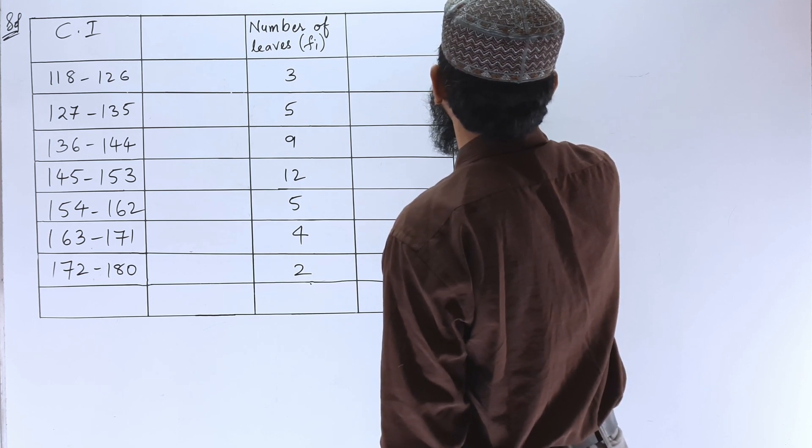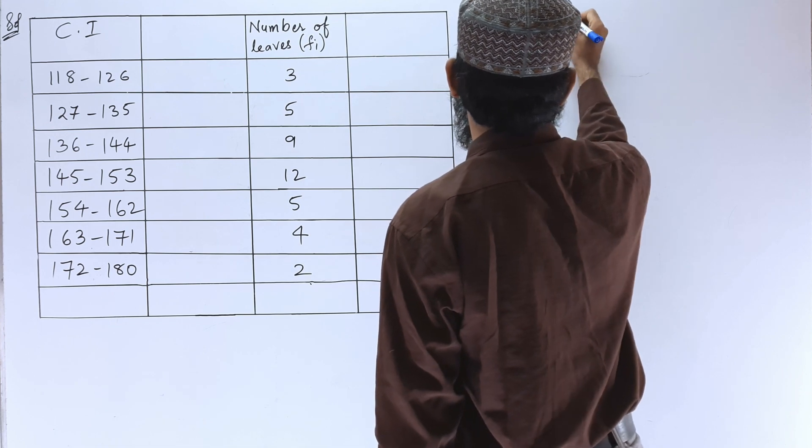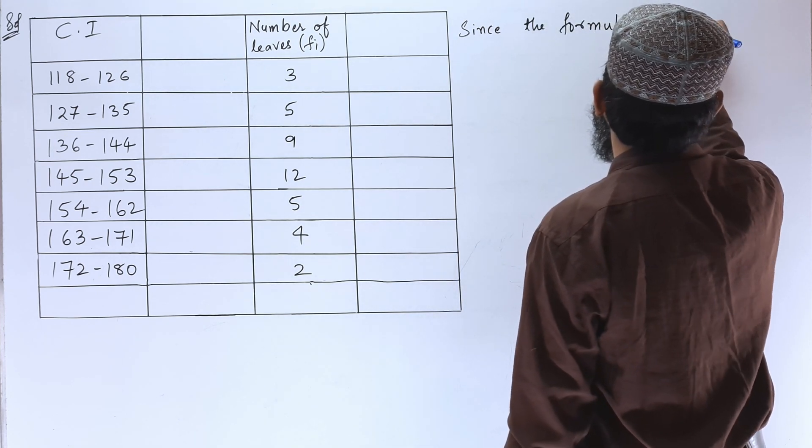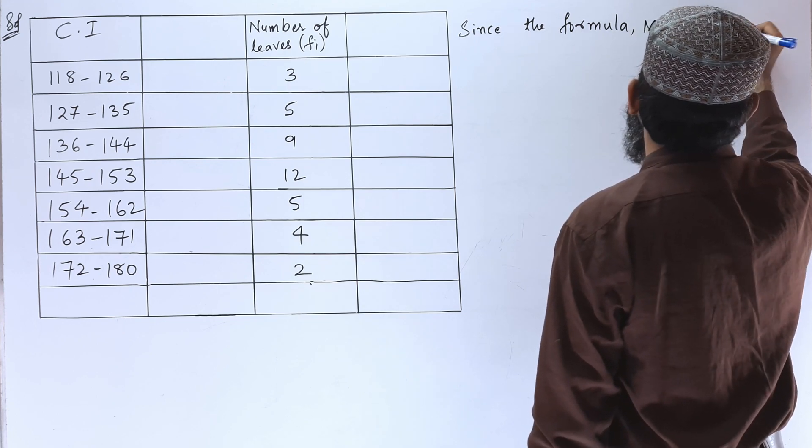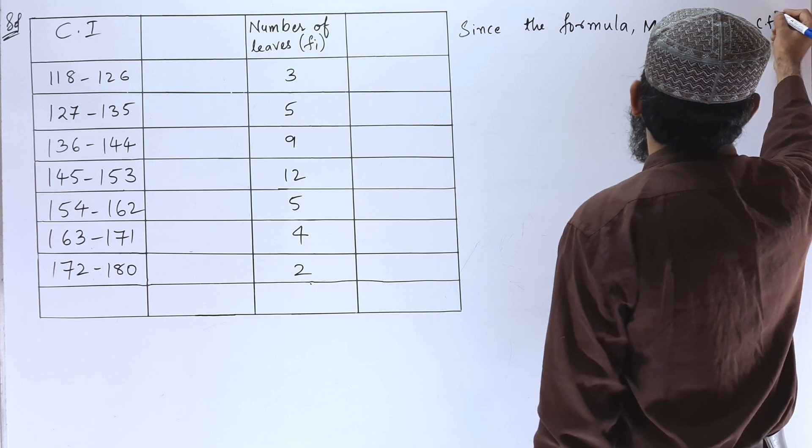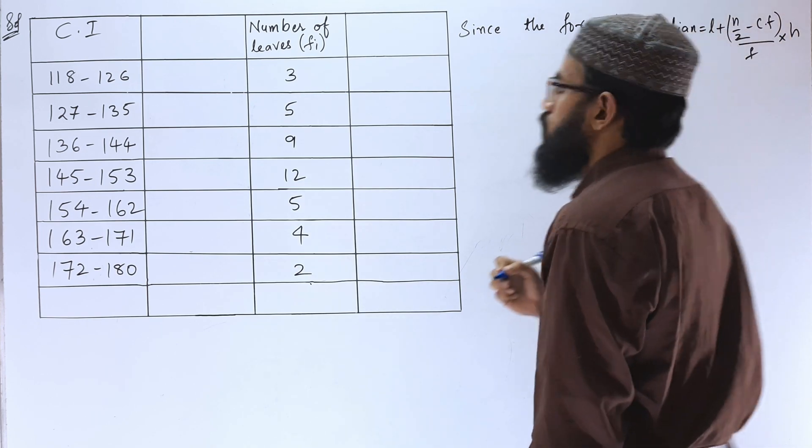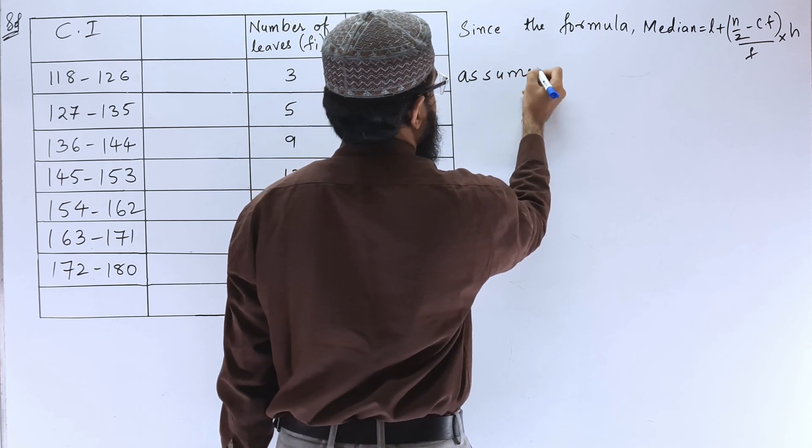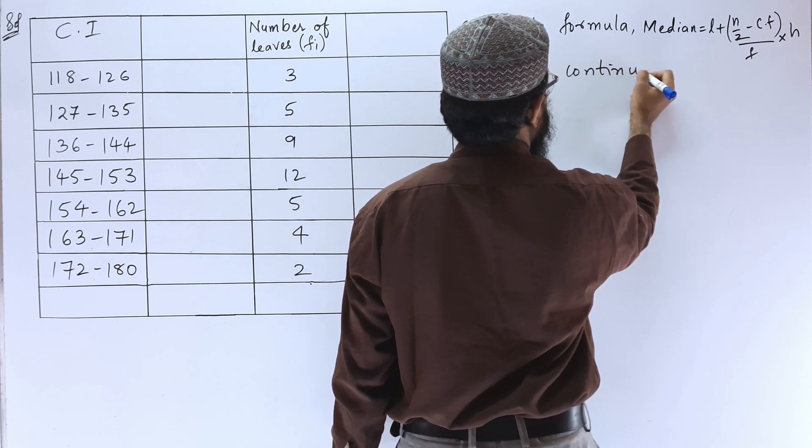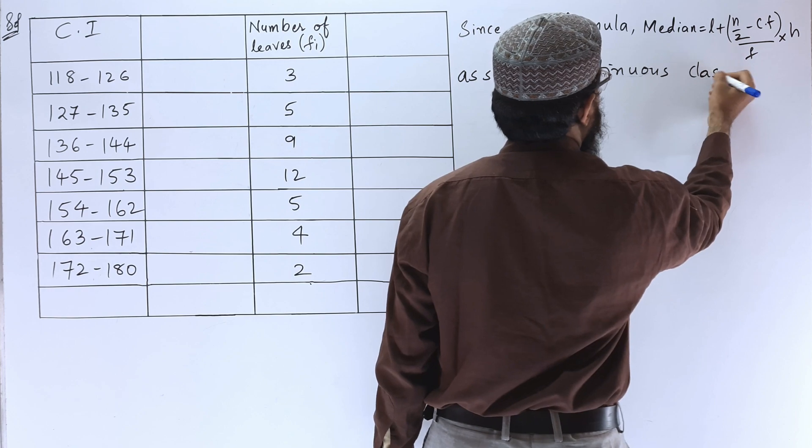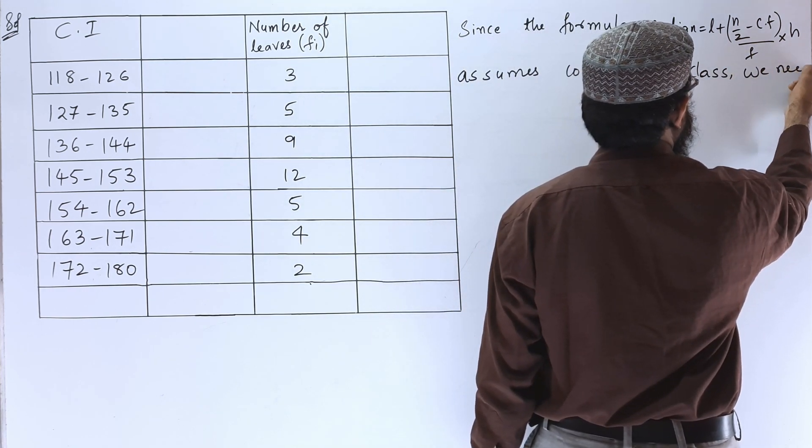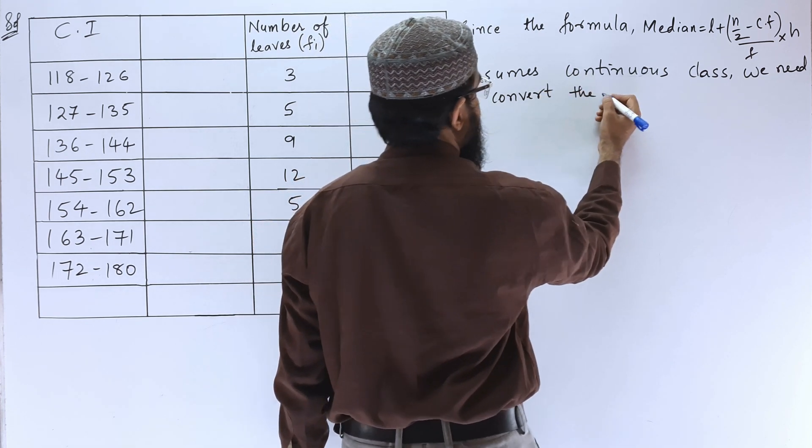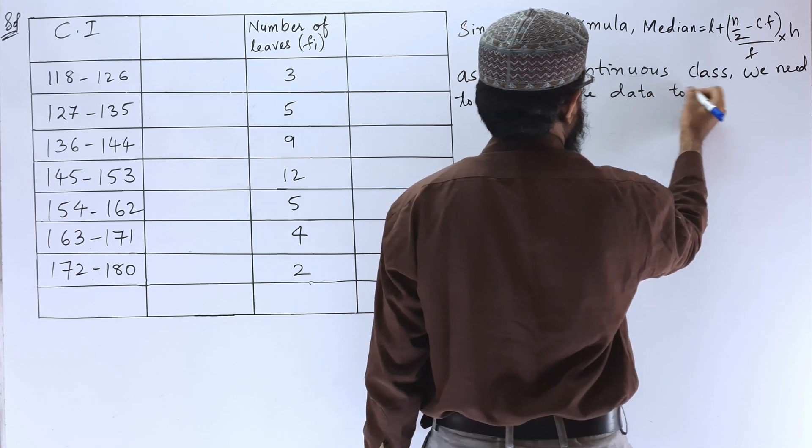In solution, let us write since the formula, the median is equals to L plus N by 2 minus CF by F into H. This formula assumes the continuous class. Since the formula assumes continuous class, we need to convert the data to continuous class.